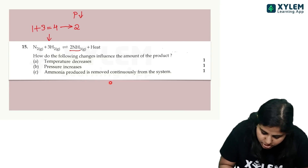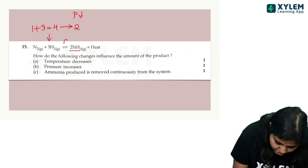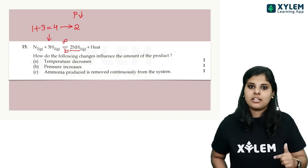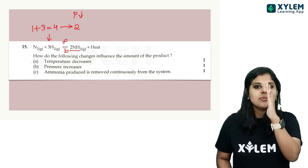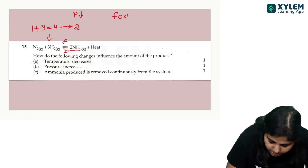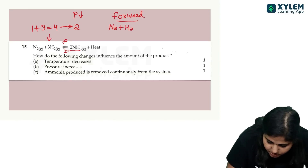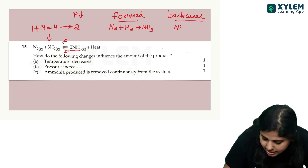Ammonia is produced continuously from the system — this is the forward reaction. The backward reaction is when ammonia decomposes. The forward reaction is: nitrogen and hydrogen produce ammonia. The backward reaction is: ammonia decomposes into N2 and H2.